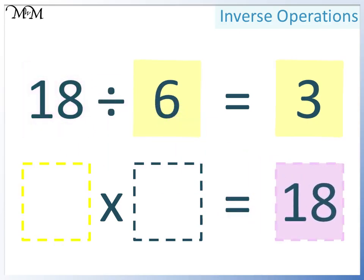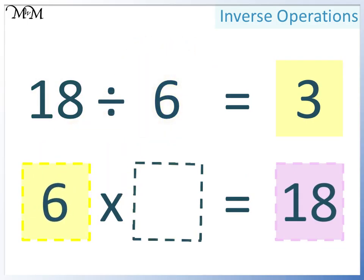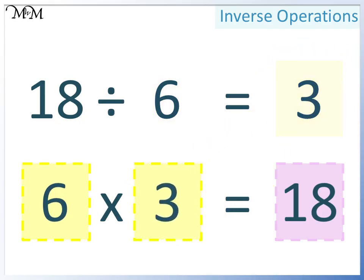Here we can have either of the two smaller numbers — this time we'll write 6 here. And so 3 must go here. 6 times 3 equals 18.